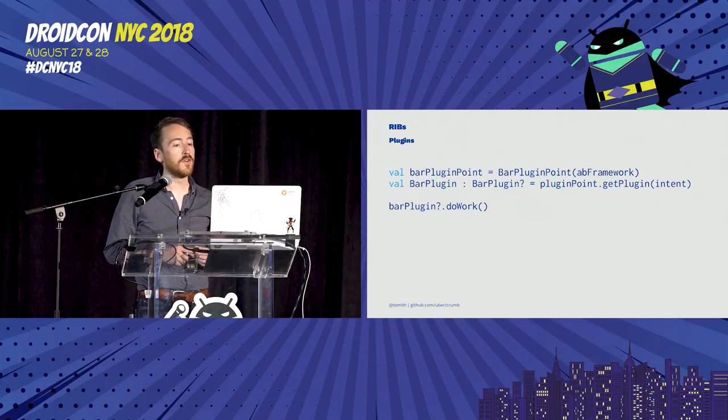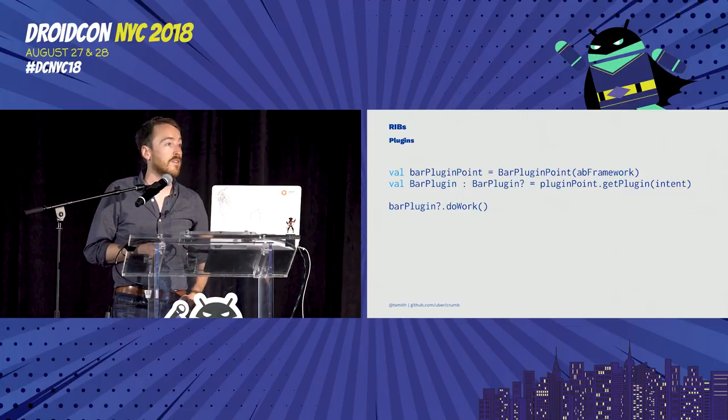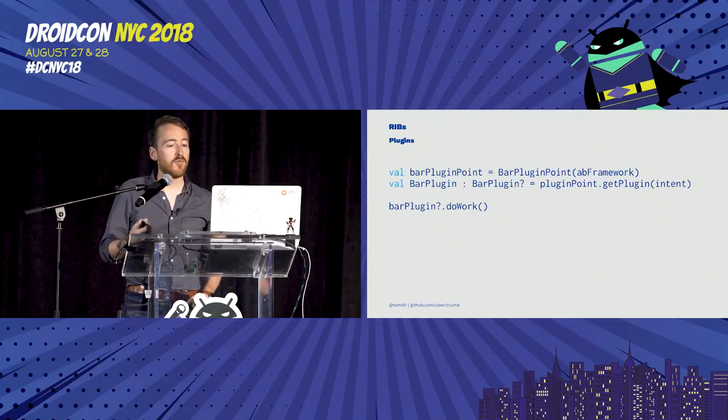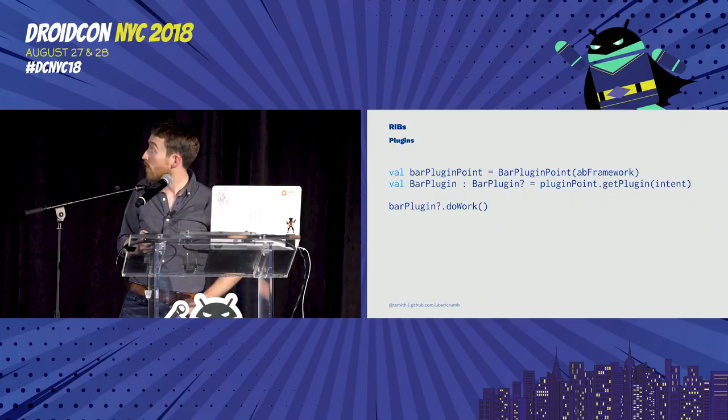A typical plugin contains an identifier that can be referenced against a copy of enabled experiments, the information to determine if it's applicable for the dependencies you provide, and the ability to create the underlying plugin. We then provide a plugin point class that lists all plugins adhering to a specific interface for that common dependency, and we're able to request a specific plugin and act against its API.